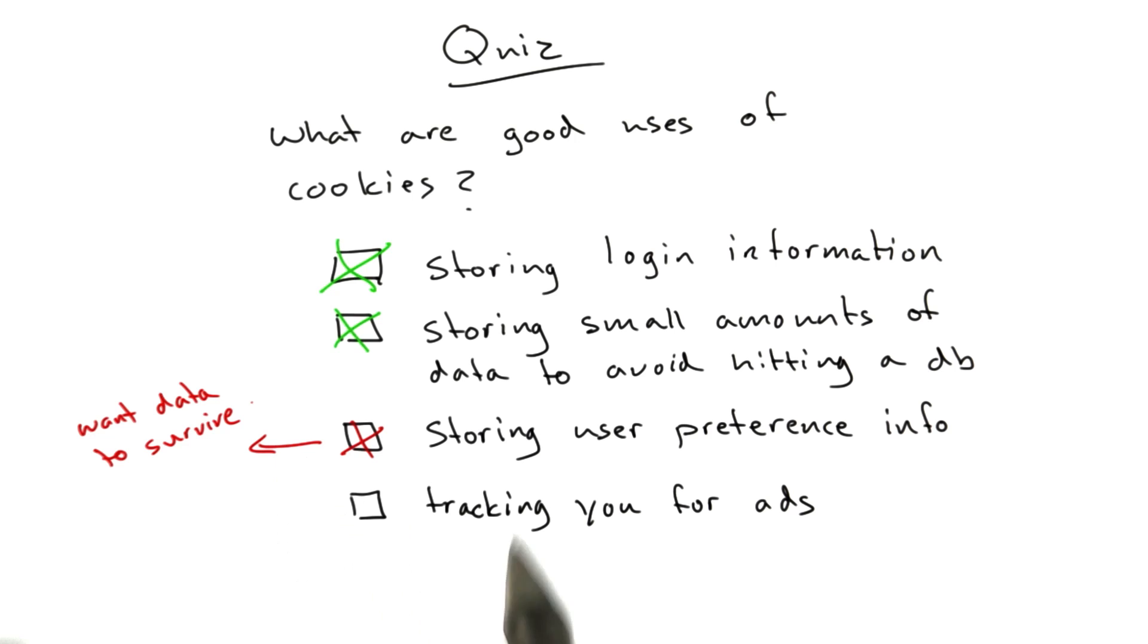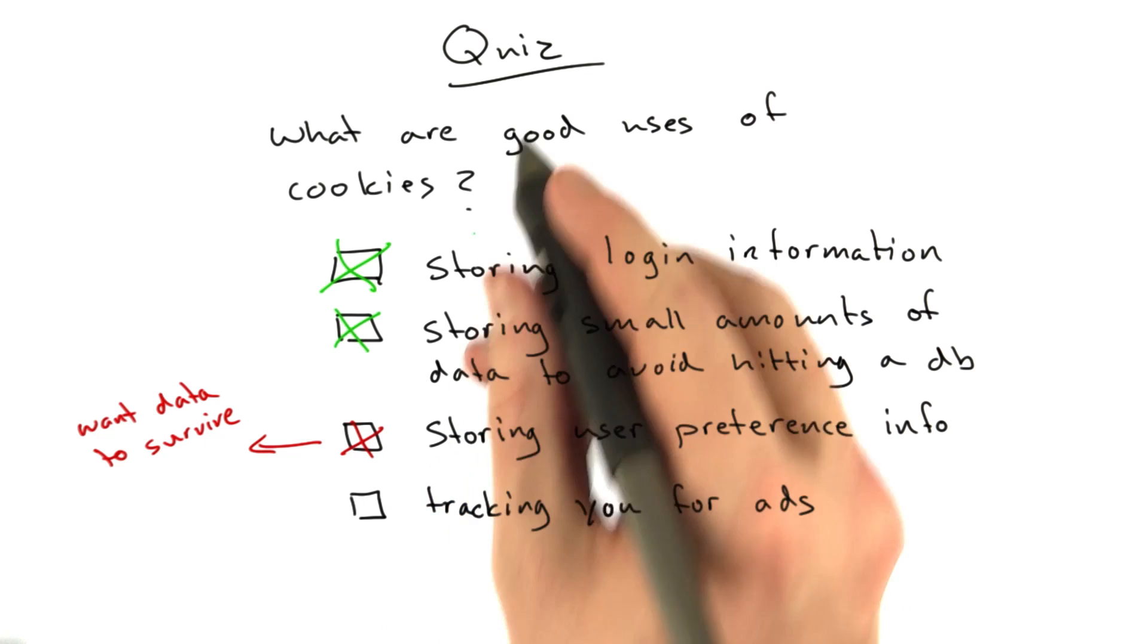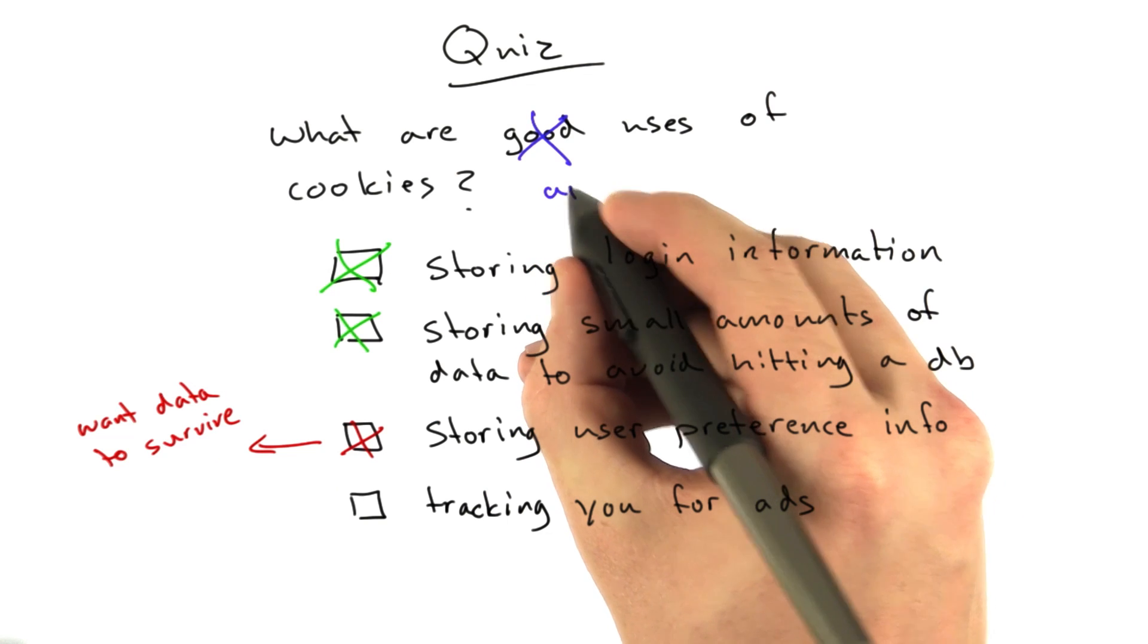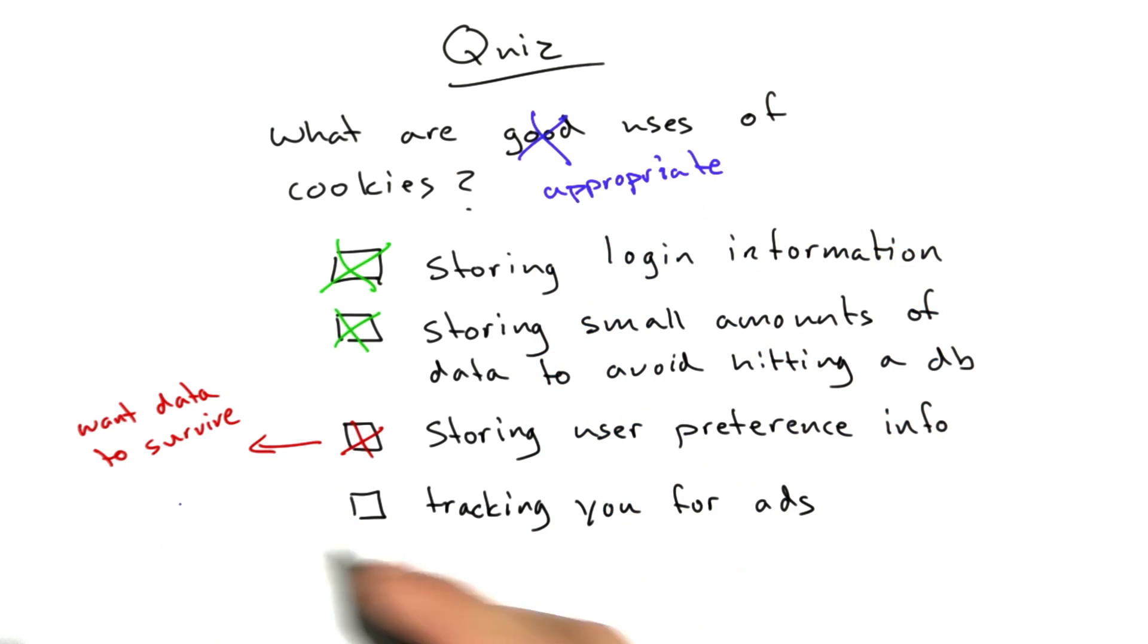And tracking you for ads. This is, unfortunately, maybe not a good use. More of an appropriate use. Because tracking you for ads isn't really inherently a good thing. But it's a really common use of cookies. You go to a website, you may find yourself with 20 cookies that are tracking you for different ad providers.